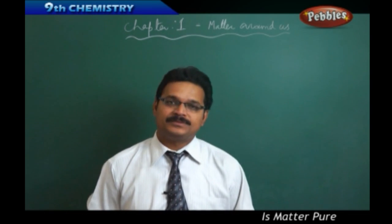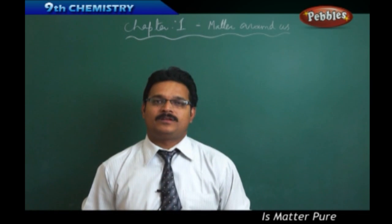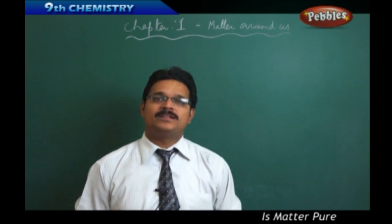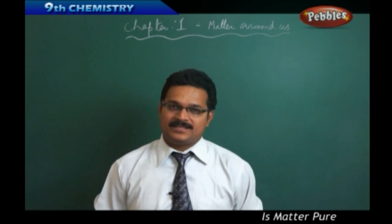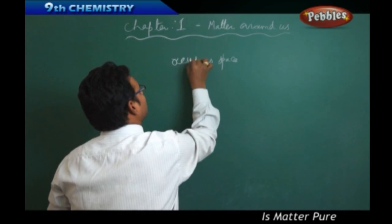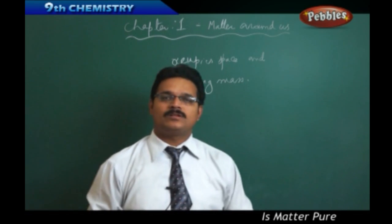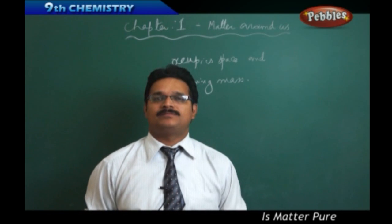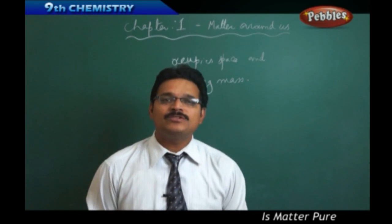What do we call all these things? In science, these are called matter. So what is matter? Matter can mean an object, a metal, a non-metal. Matter is anything we see around us. Matter is defined as anything which occupies space and has mass. Look at me - I am occupying some space and I have some mass, so I am matter. This chalk piece is also occupying space and has mass, so it is also matter.